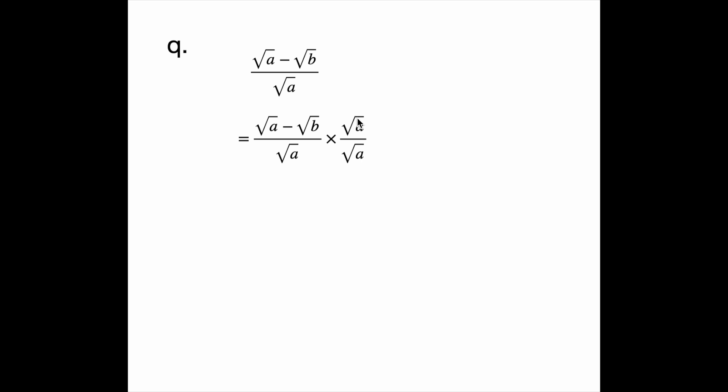Question Q. We have root a minus root b divided by root a. To rationalize it, I am just going to multiply the bottom by root a. If I multiply the bottom by root a, I have to multiply the top by root a.